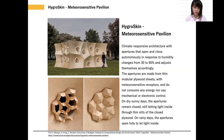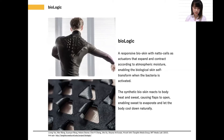On dry sunny days, the apertures remain closed, still letting light inside through thin slits. On rainy days, the apertures open fully to let light inside. Biologic is a responsive bioskin with natto cells as actuators that expand and contract according to atmospheric moisture, enabling the biological skin to self-transform when the bacteria is activated. The synthetic bioskin reacts to body heat and sweat, causing flaps to open, enabling sweat to evaporate and let the body cool down naturally.